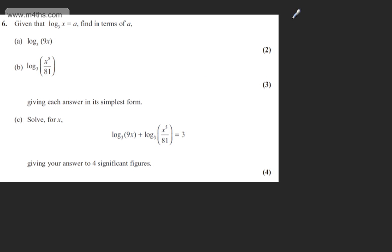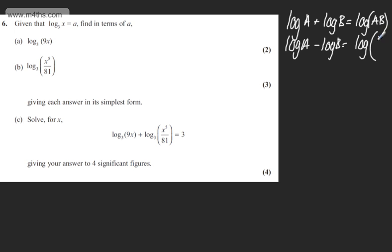What I'm going to do is write out three different log laws. We have log a plus log b is equal to log ab. So if we have a sum, it becomes a product. If we have a difference, so log a minus log b, this becomes a quotient. So we have a log of a divided by b. If we have log a to the power of k, using the power law, we can bring the power down and write this as k log a.